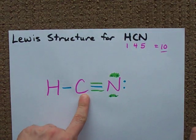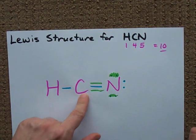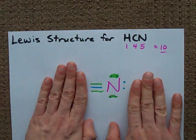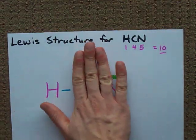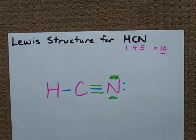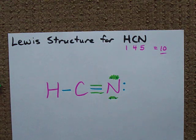Now carbon has eight electrons. That's the way it goes. Nitrogen has eight electrons around it. Carbon has eight. And hydrogen has its max, too. This is the Lewis structure for HCN.